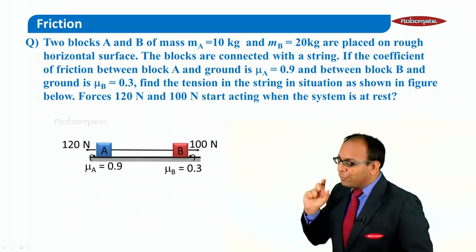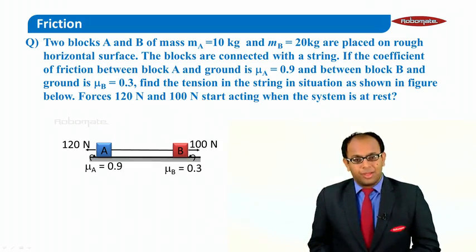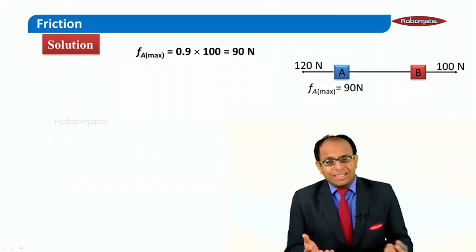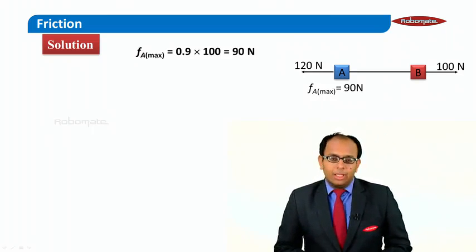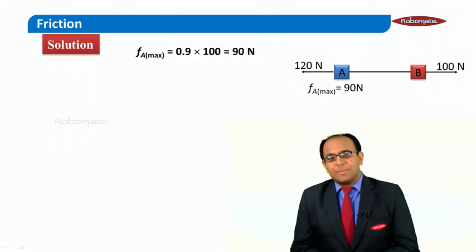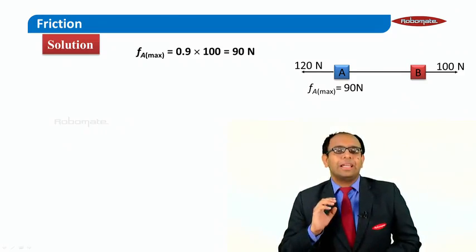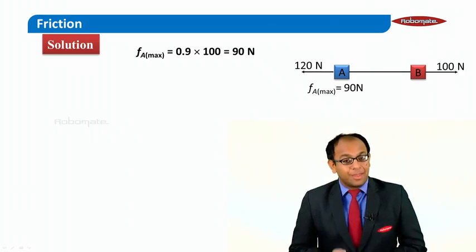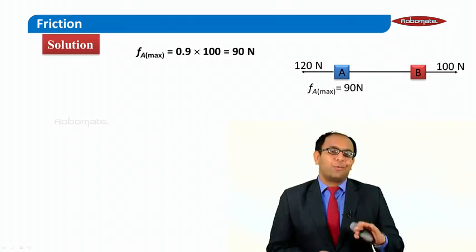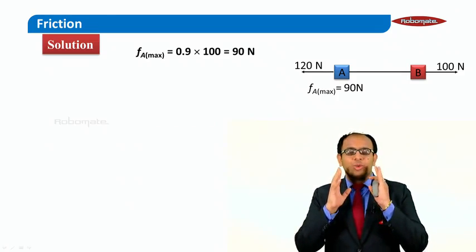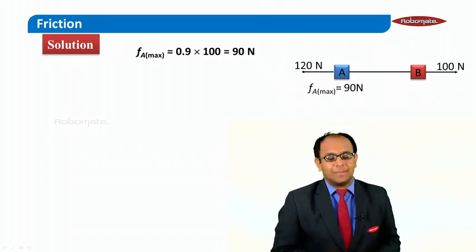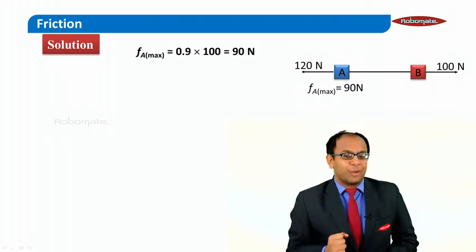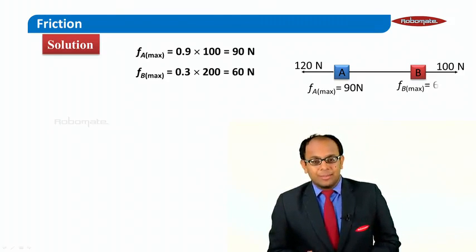This particular scenario is a very beautiful situation that will teach us many things. The possibilities that can arise from forces 120 and 100 are: A and B move, or A and B don't move. For any possibility, we need to know the limiting values of friction. Since mu_s and mu_k are not mentioned separately, we take them as the same. For A, mass is 10 kg so mg is 100 N, and with mu = 0.9, fa_max = 90 N. Similarly, fb_max = 60 N.